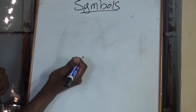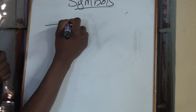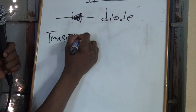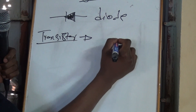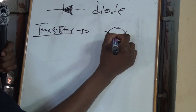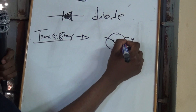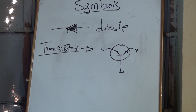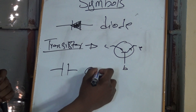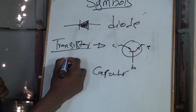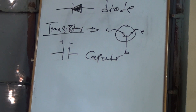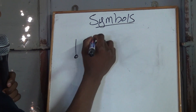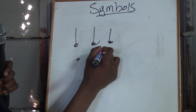Next you have your diode — this is how you draw it. And your transistor — this is how you draw your transistor. Then the capacitor — you draw it like this, marking plus and minus. Finally, the circuit breaker is drawn like this — that's how you draw your circuit breaker.